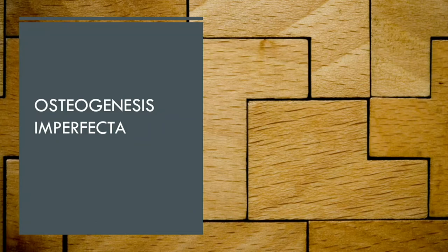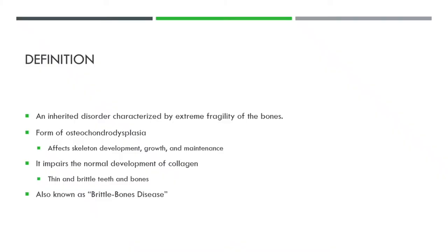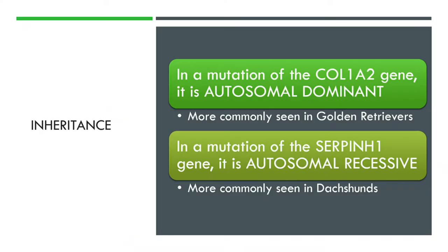I'm going to be talking about osteogenesis imperfecta, mainly in dogs but can also be shown in cats. Going over the definition: it's an inherited disorder characterized by extreme fragility of the bones. It is a form of osteochondrodysplasia, which affects skeletal development, growth, and maintenance, and impairs the normal development of collagen, leading to thin and brittle teeth and bones. This is sometimes more commonly referred to as brittle bone disease.